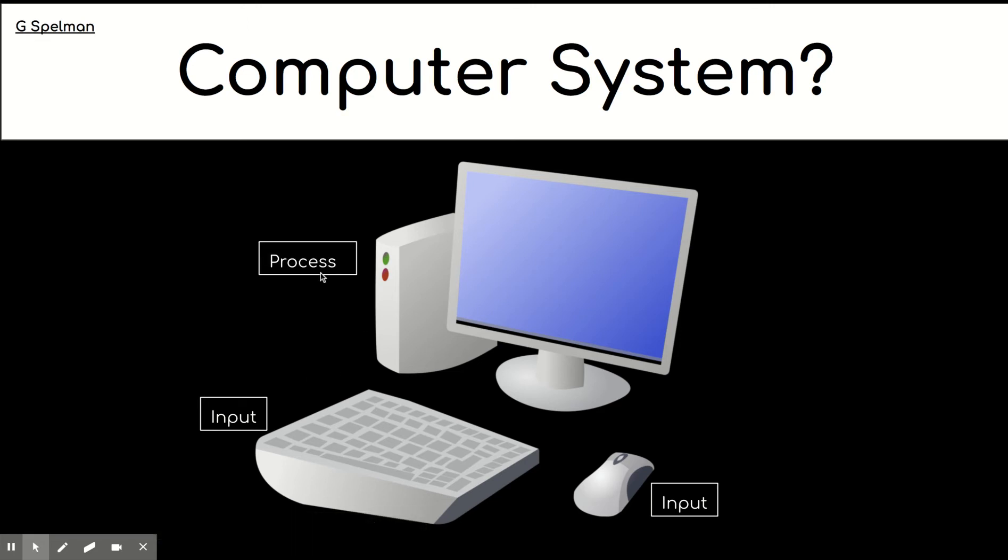Computer system processes that input, now inside this box here there will be a CPU doing the processing and a computer system allows us to output the information that's a result of that processing. It needs to use storage while it does this and again the storage in this diagram here would be inside that box.